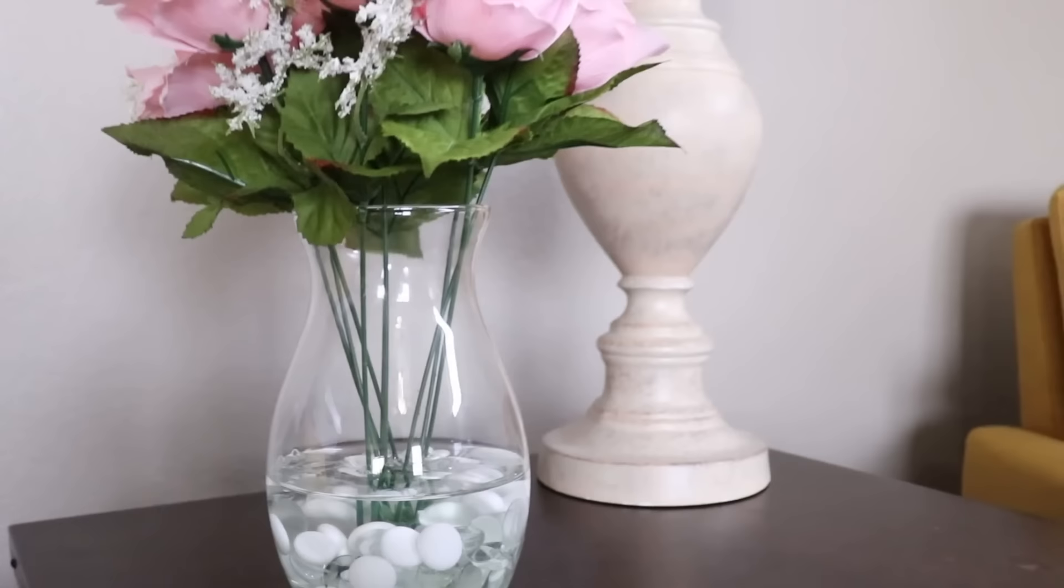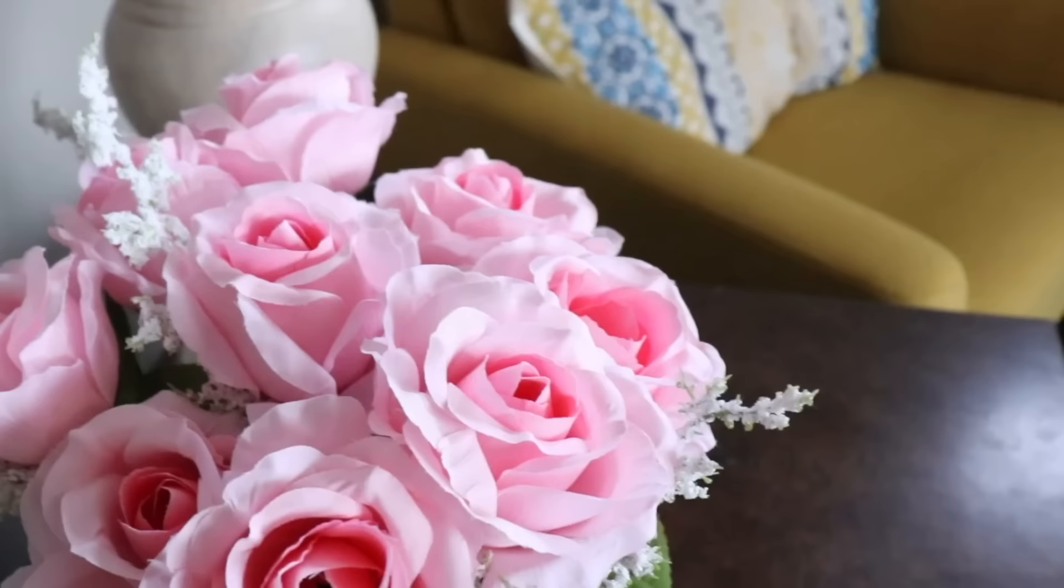Once you've got them arranged just right, set this aside and let it dry. Now you have a permanent floral arrangement that looks like it has water and stones in the bottom of it. This is going to look great in your home. Next up, we are going to grab a couple glass mason jars.